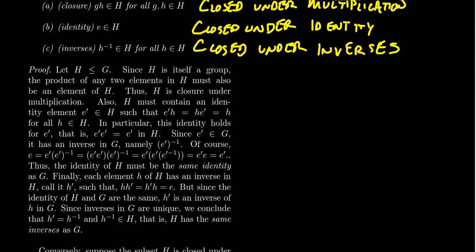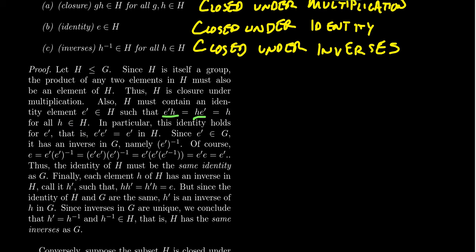What about the identity? Well, H has to contain an identity if it's a subgroup — it's a group in its own right — so it has an identity. Let's call that identity E′. That means E′h = hE′ = h for all elements in H. This E′ could potentially be a different element from the identity of the ambient group G. Since E′ is inside H, it must be true that E′ times E′ equals E′. This is what we call an idempotent element — its square equals itself.